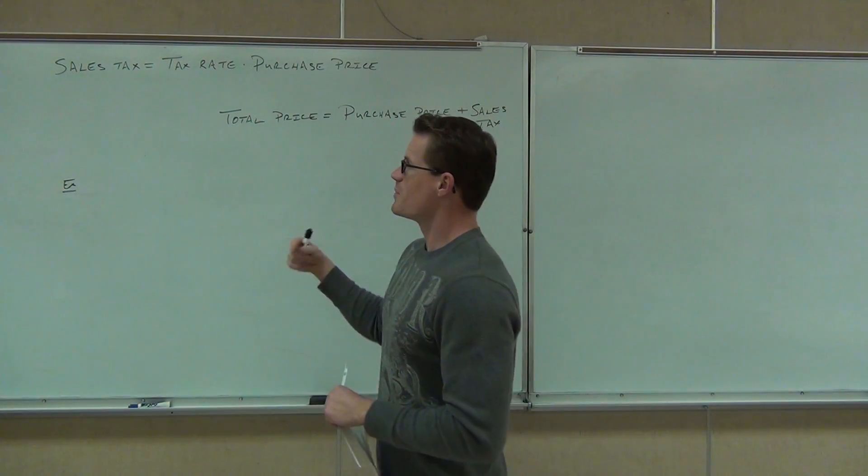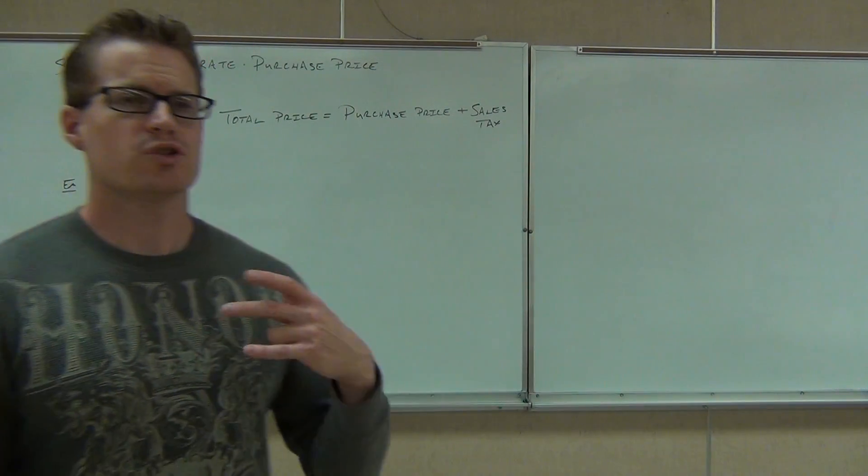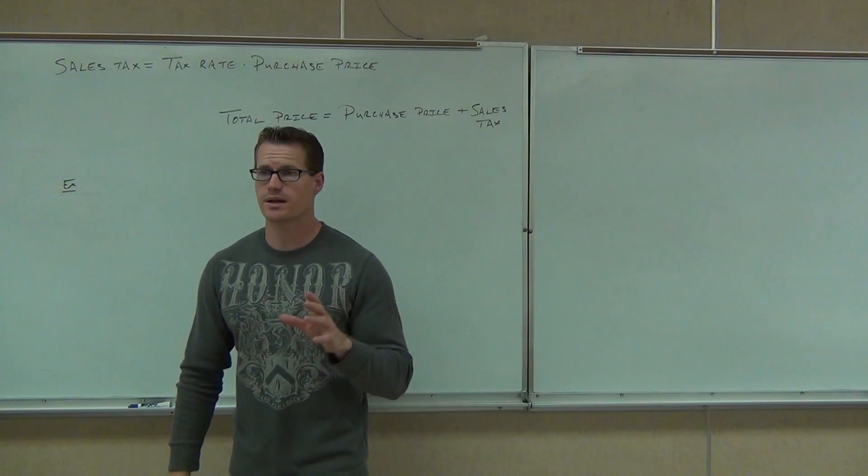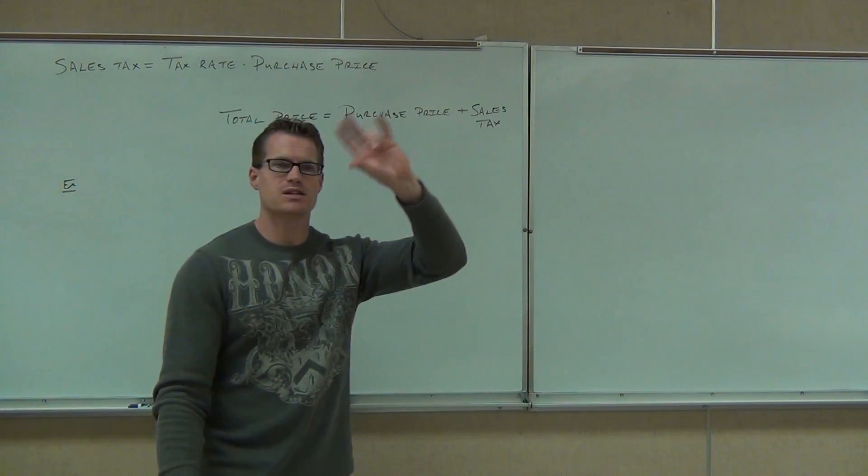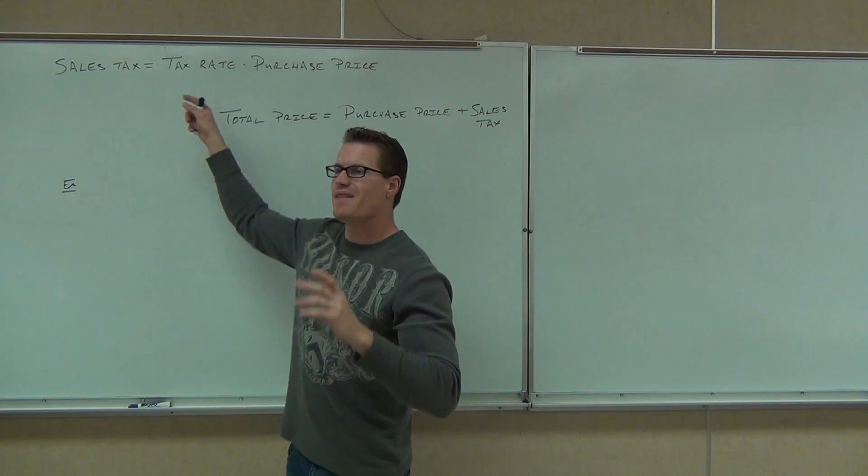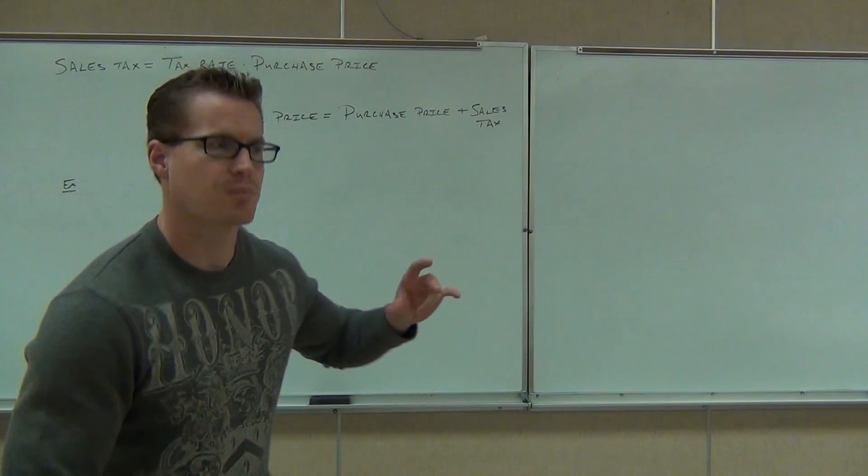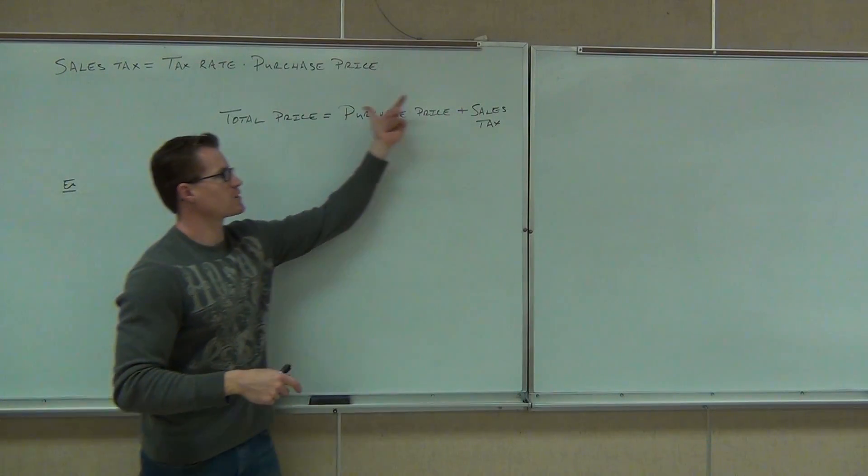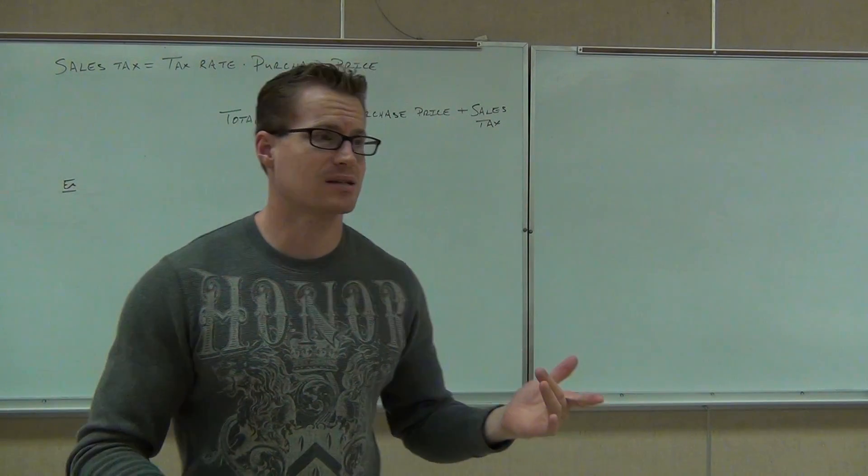So we're still talking about taxes and commission, basically dealing with percentages. When we're trying to find out sales tax, which maybe this weekend you had a whole lot of sales tax if you bought anything, sales tax is found by taking the price, the sticker price, whatever you're paying for, multiplying it by some tax rate. That gives you the amount of tax that you're going to be charged. On top of that purchase price, you add your sales tax. That gives you what your check comes out to, what you're actually going to pay.